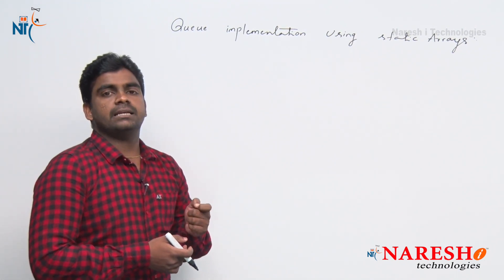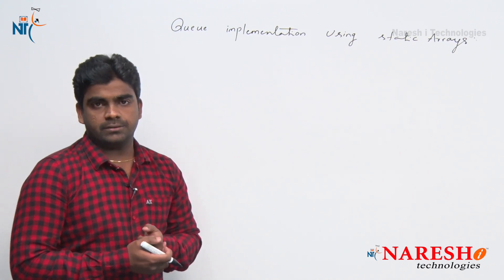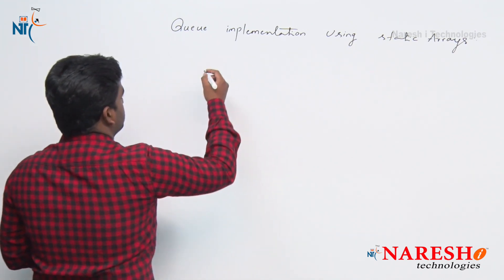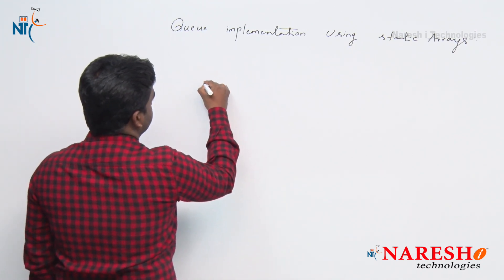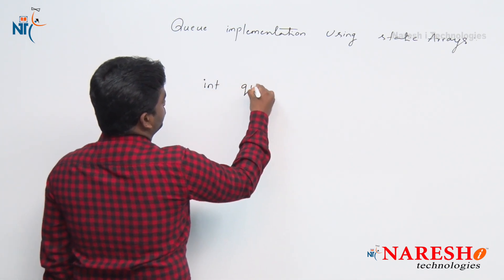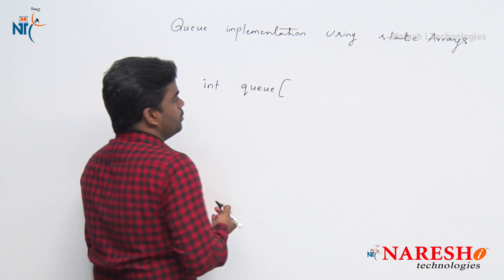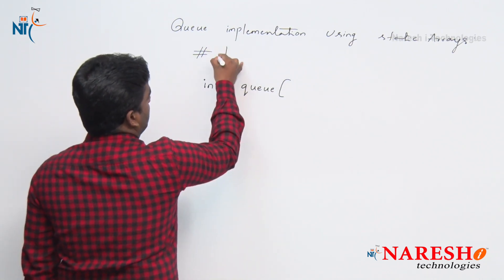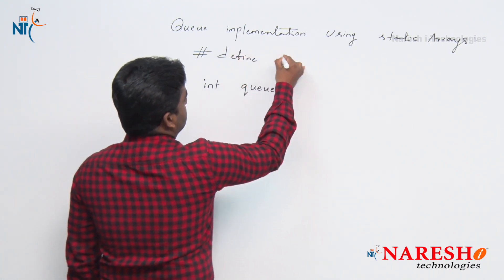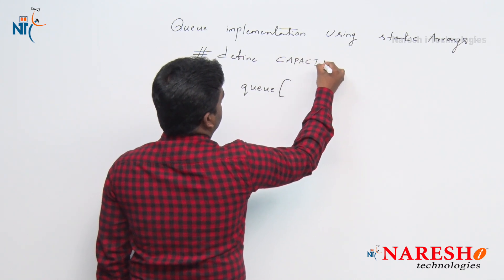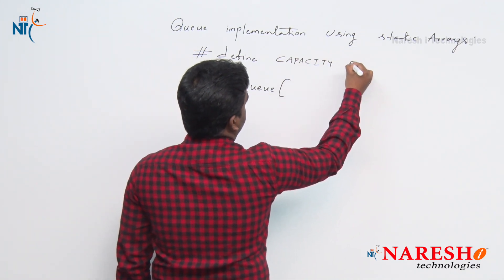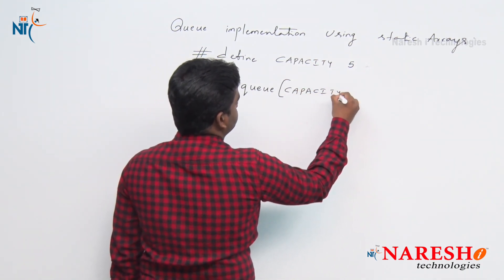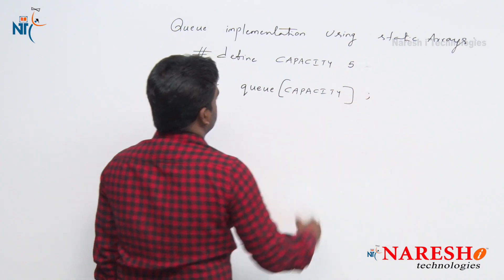How to implement? First, declaration of a queue is very important. The size is a fixed size. Here I am declaring one queue: int queue with size 5. More clearly, using a preprocessor directive: hash define CAPACITY 5. That CAPACITY we are writing here — this is the declaration.